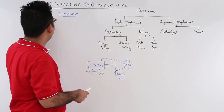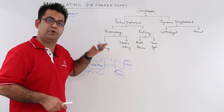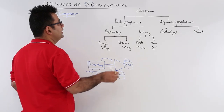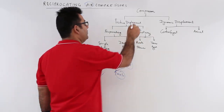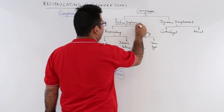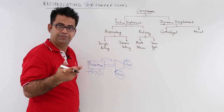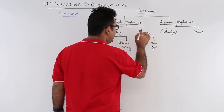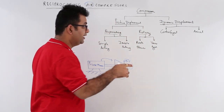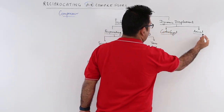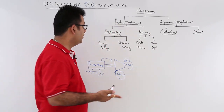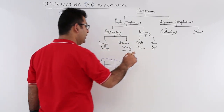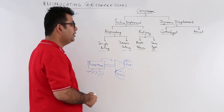Before we start talking dedicatedly about reciprocating air compressors, let's classify the compressors into subcategories. Broadly speaking, a compressor can be divided into positive displacement and dynamic displacement. Positive displacement can be further broken up into reciprocating and rotary, whereas dynamic can be broken into centrifugal and axial. Reciprocating can be single acting or double acting, and rotary has two types: roots, flow, and vane type.